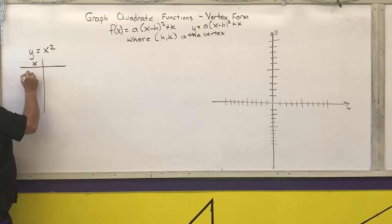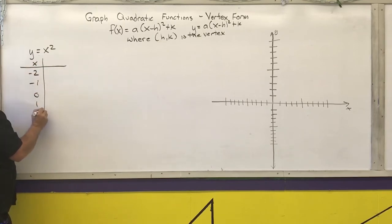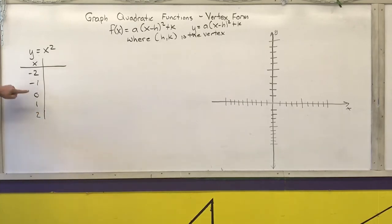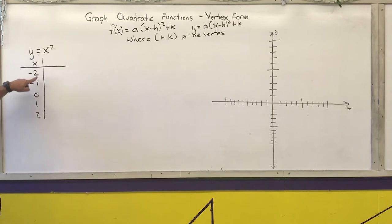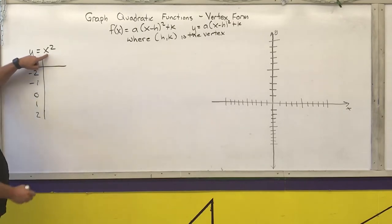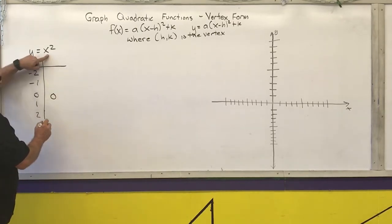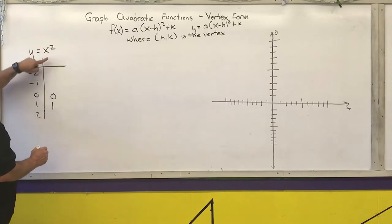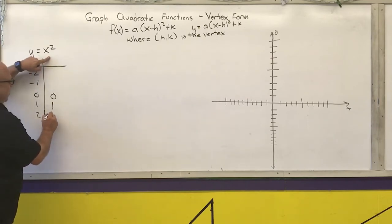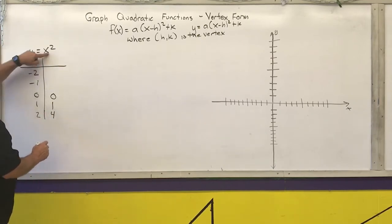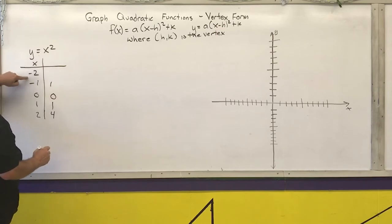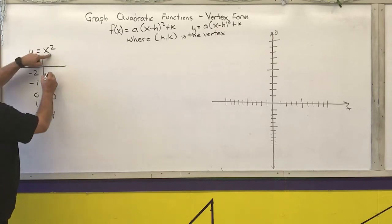The five points we use to graph the parent function use x-values of negative 2, negative 1, 0, 1, and 2, where 0 is the vertex. So: 0 squared is 0, 1 squared is 1, 2 squared is 4, negative 1 squared is 1, and negative 2 squared is 4.